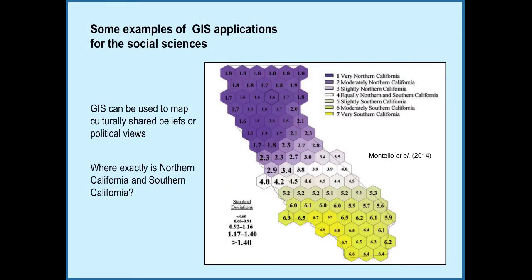GIS can help answer questions that at first seem extremely difficult or impossible to answer. GIS can be used to map culturally shared beliefs or political views. Californians commonly divide the state into northern California and southern California with cultural traits attributed to each region. It seems that no two people can completely agree on the dividing line between the two regions. However, if you ask enough people living across the state to categorize where they live on a sliding scale from very northern California to very southern California and analyze the data in a GIS platform, then a consensus answer emerges.